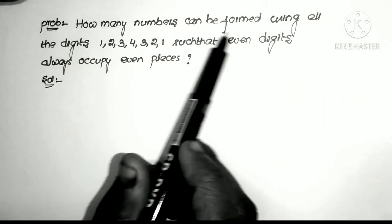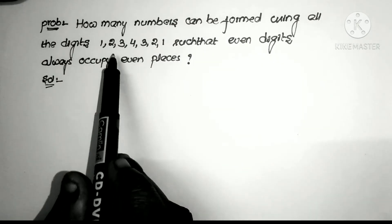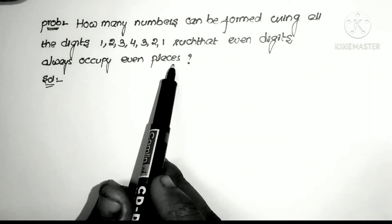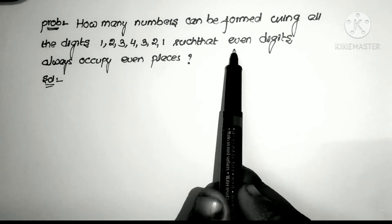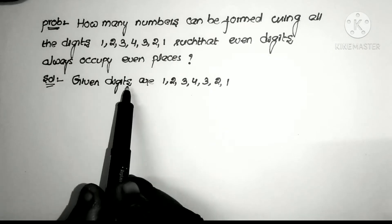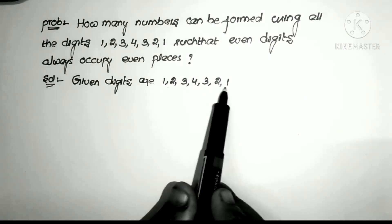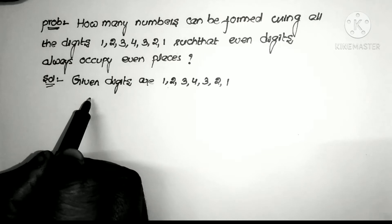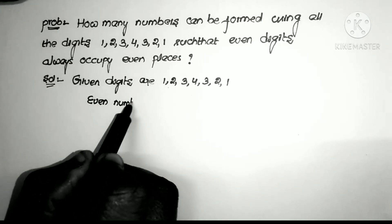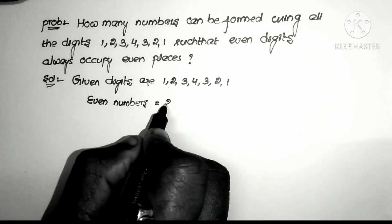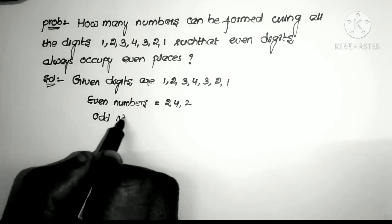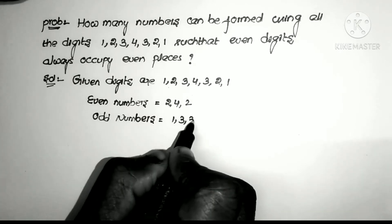First problem: how many numbers can be formed using all the digits 1, 2, 3, 4, 3, 2, 1 such that even digits always occupy even places? The given digits are 1, 2, 3, 4, 3, 2, 1. The even numbers among them are 2, 4, 2 and the odd numbers are 1, 3, 3, 1.